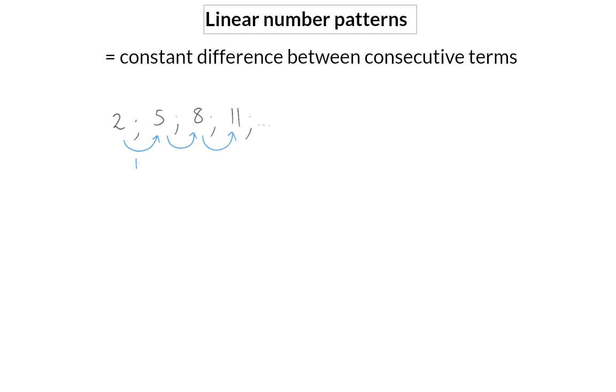A number pattern is classified as a linear number pattern if there's a constant difference between consecutive terms. This means that you constantly add the same value to get the next term, or you constantly subtract the same value to get the next term.